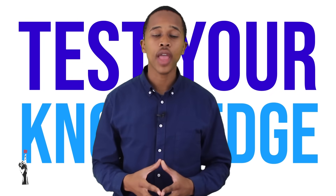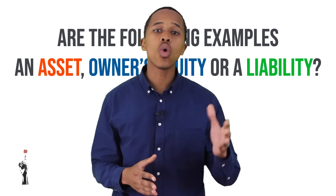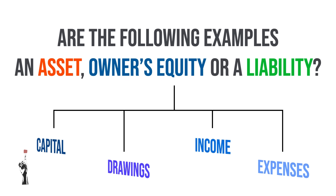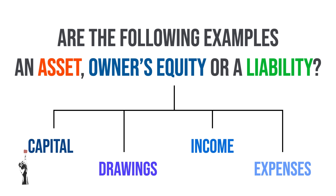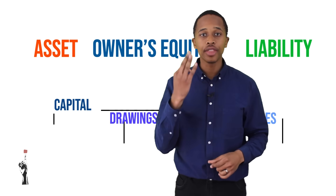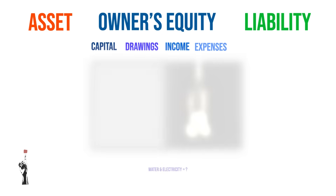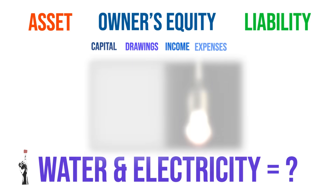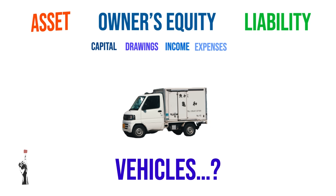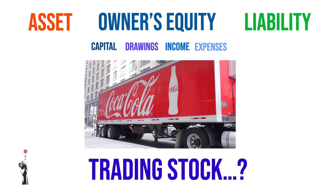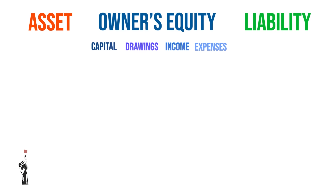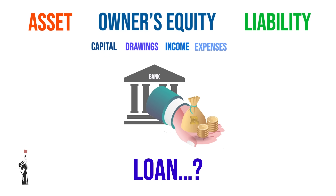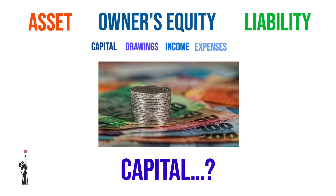We're going to put a few examples on the screen and you have to identify whether it's an asset, a liability, or owner's equity. Remember, when the answer is owner's equity, you still have to specify if it's a drawing, an expense, an income, or capital. Number one: water and electricity — that is under owner's equity, specifically expenses. Number two: vehicles — that's under assets. Number three: trading stock — also under assets. Number four: a loan — a loan is a liability. Number five: capital — it's owner's equity, under capital.